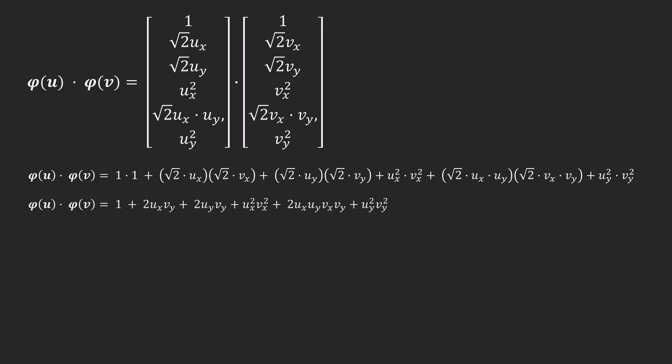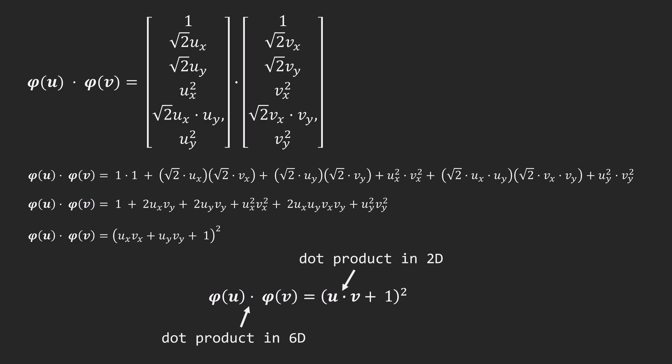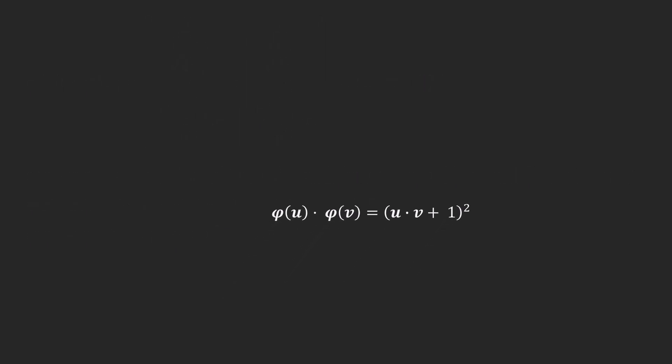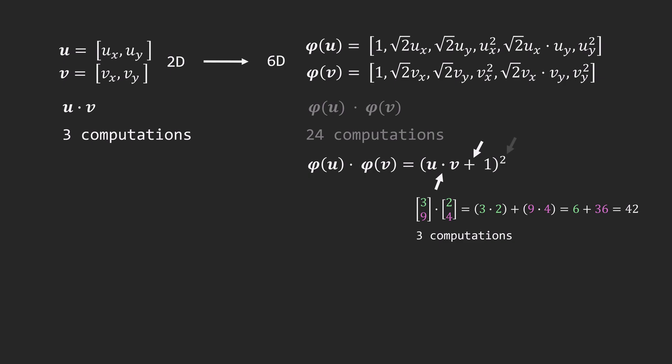However, it turns out that we can simplify this complex six-dimensional dot product to a simpler form of an original two-dimensional dot product plus one, all squared. Remarkably, this simpler calculation yields exactly the same result as the complex six-dimensional calculation. The simplified computation involves only five steps, nearly five times fewer than the original 24 steps. I selected this specific set of features to allow the transformation of a six-dimensional dot product into a combination of operations based on a two-dimensional dot product, which dramatically reduces computation time. But this simplification isn't possible for just any set of features – it only works when the chosen features can be aggregated and expressed as a function of a lower-dimensional dot product.